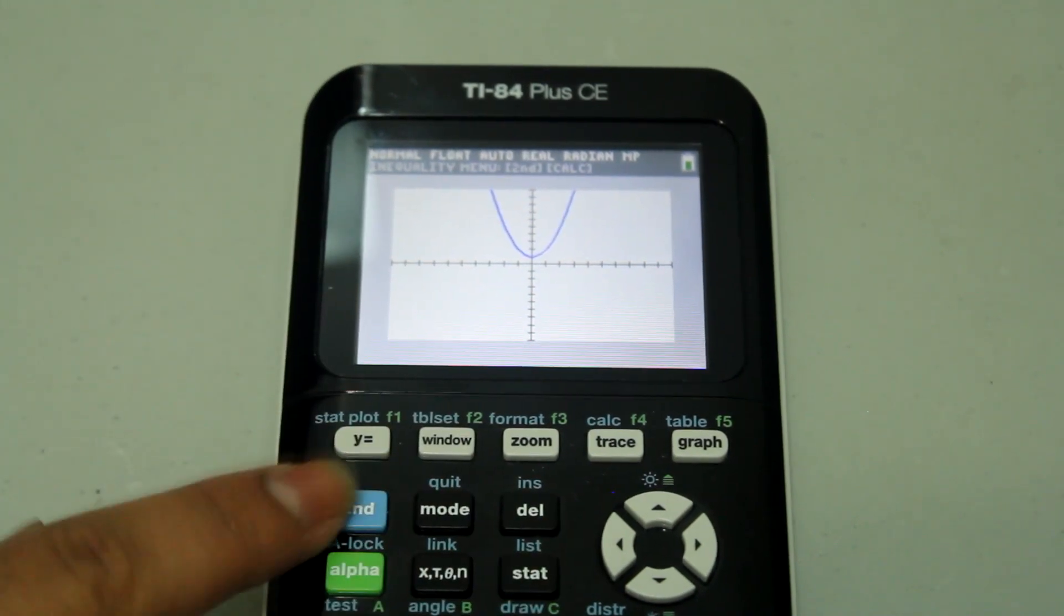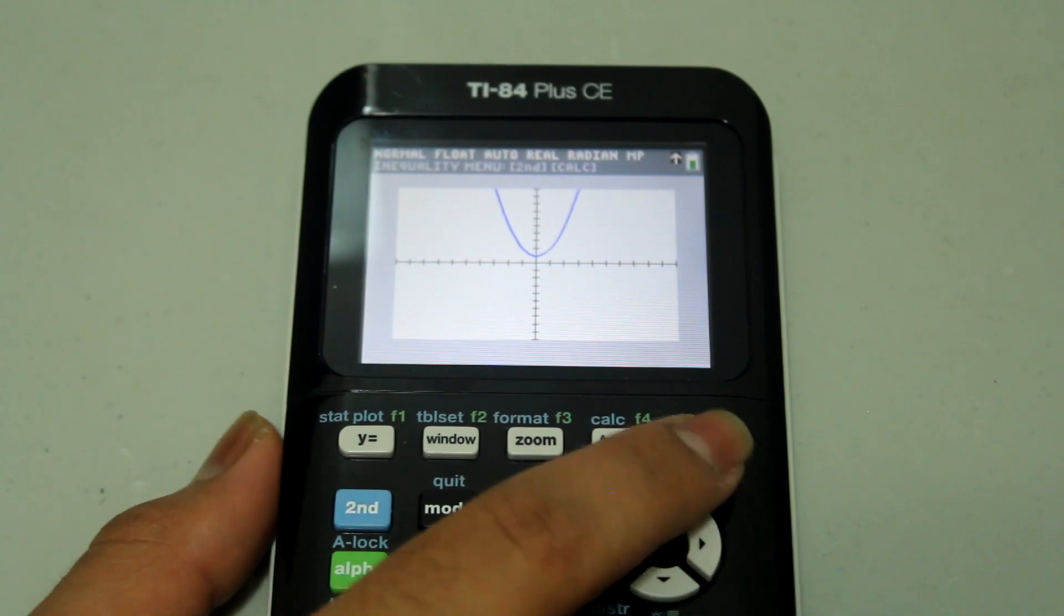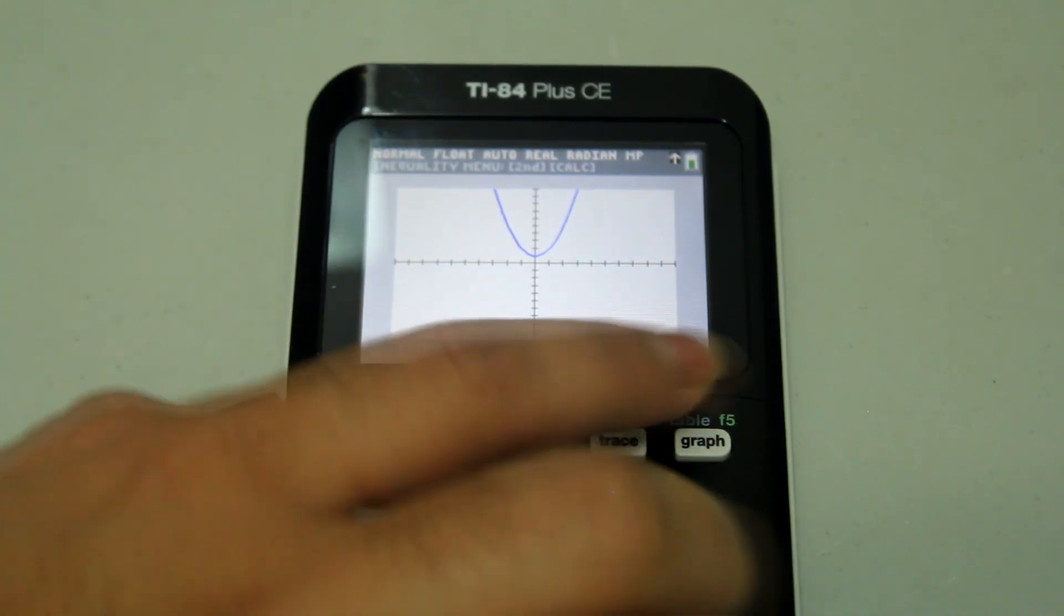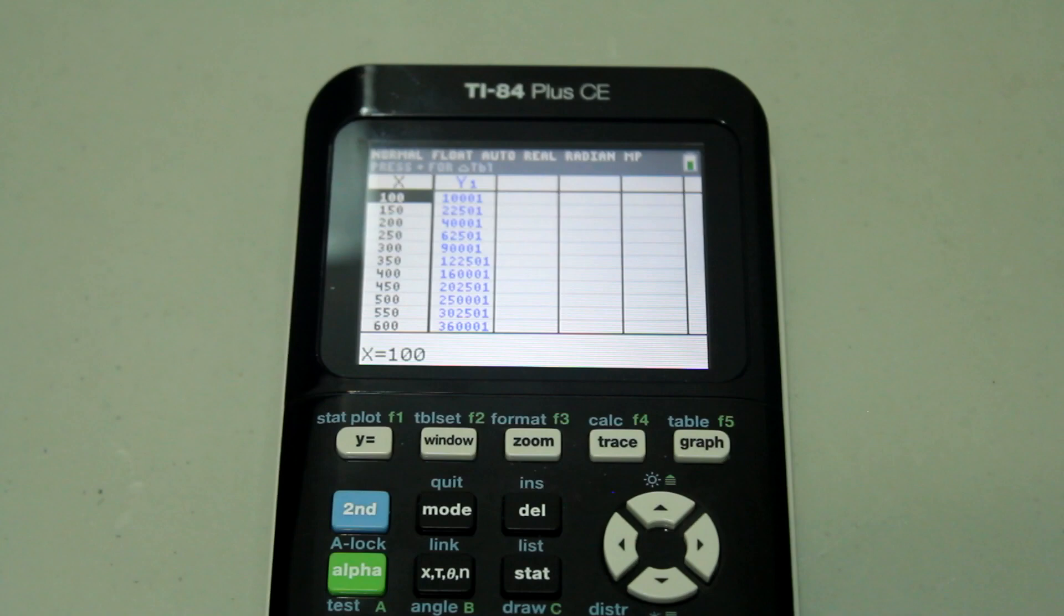To get the table by itself, I hit second graph, which has the table in blue. If I hit second graph, it brings up the table.